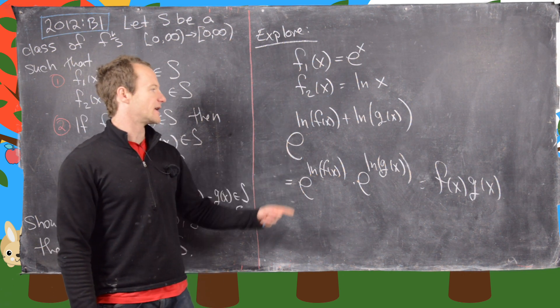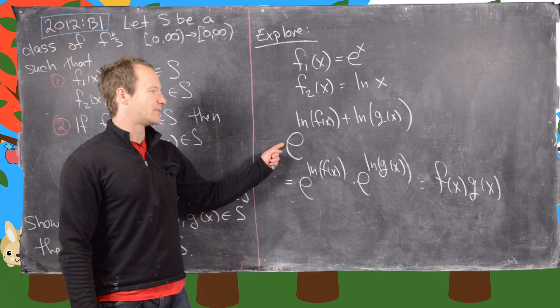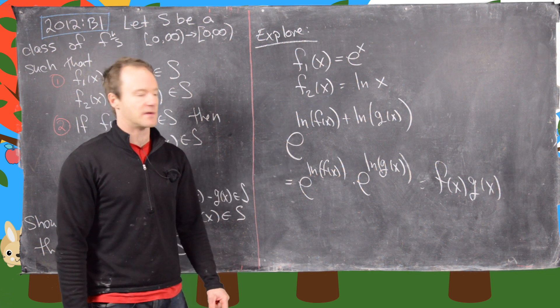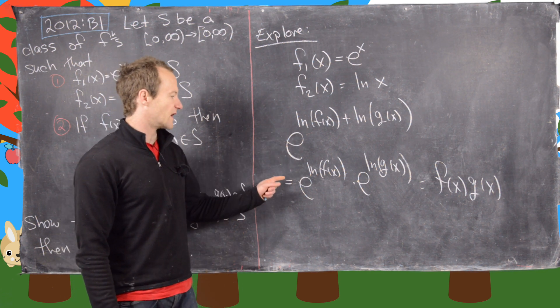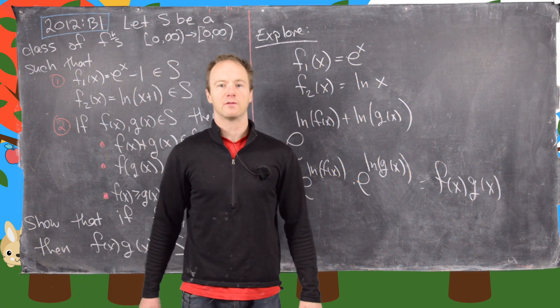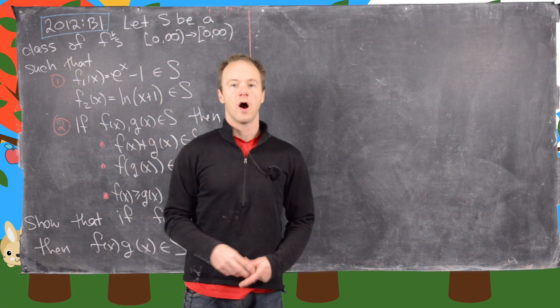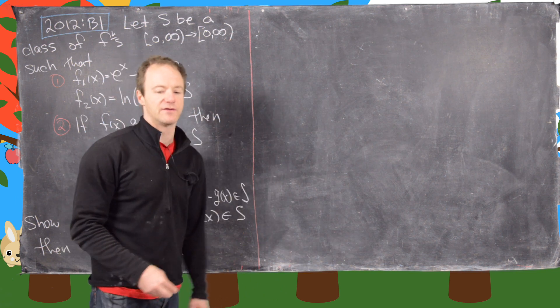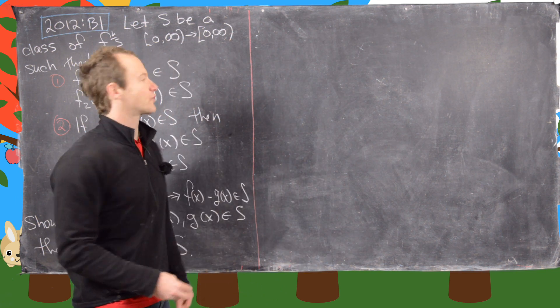Notice the important part here is that this nice composition of the exponential and the logarithm function allows us to turn a sum into a product. I'll clean up the board and then we'll look at the real solution. So now that we've looked at a simplified version of the solution, let's look at the real solution.